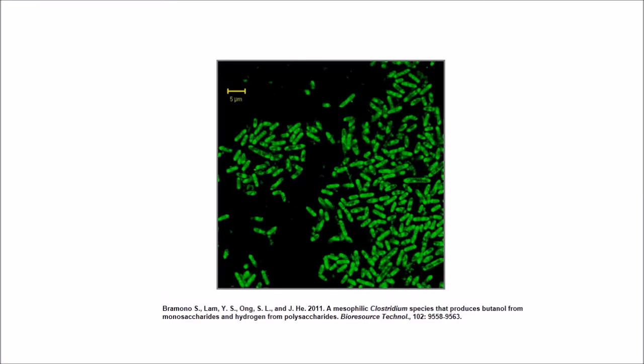However, utilization of lignocellulosic biomass, being composed of both 5 and 6 carbon sugars, is challenging, considering the fact that solventogenic bacteria in general prefer to utilize 6 carbon sugars only. A major breakthrough in this regard was obtained in my lab with the discovery of Clostridium beijerinckii, which can simultaneously utilize both 5 and 6 carbon sugars.